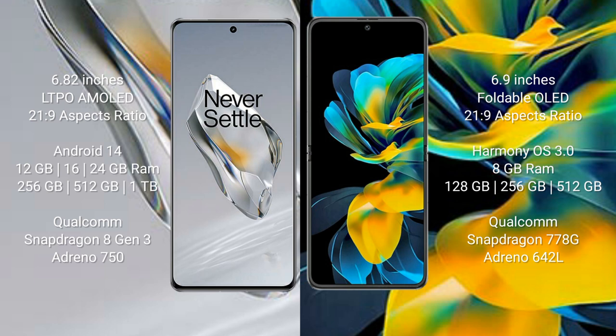The OnePlus 12 runs on the Android 14 operating system, while the Huawei Pocket S runs on the HarmonyOS operating system.